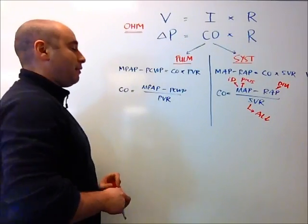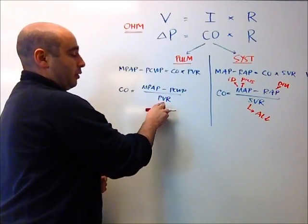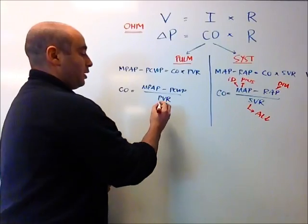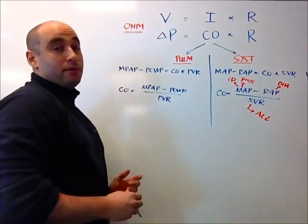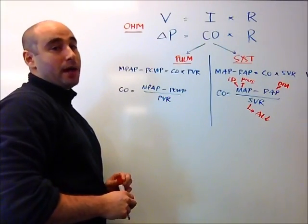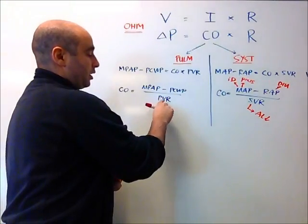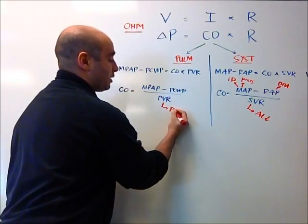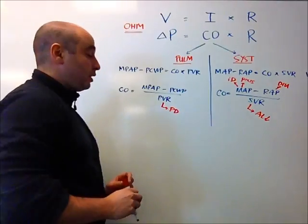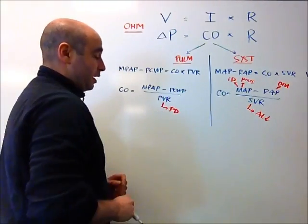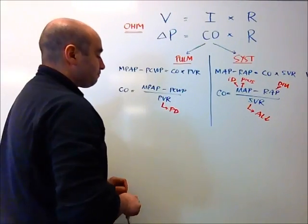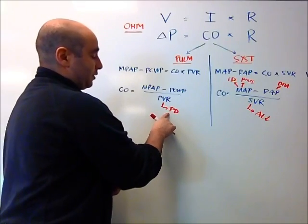When we look over here on the pulmonary side of things, if we start in the denominator, we want to make this term as small as possible. A high PVR is another way of saying that the person has pulmonary hypertension. In order to reduce this, we have a number of medications, and these are pulmonary vasodilators. This might be inhaled nitrous. It might be a pulmonary vasodilator such as sildenafil. And that will help to reduce this term.